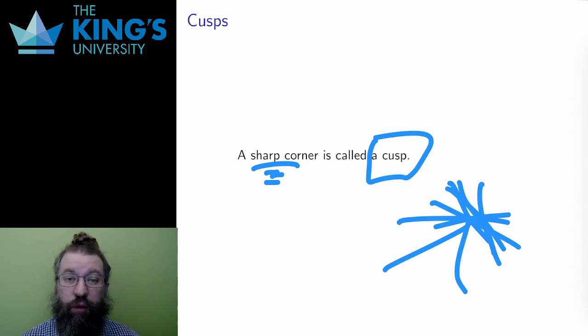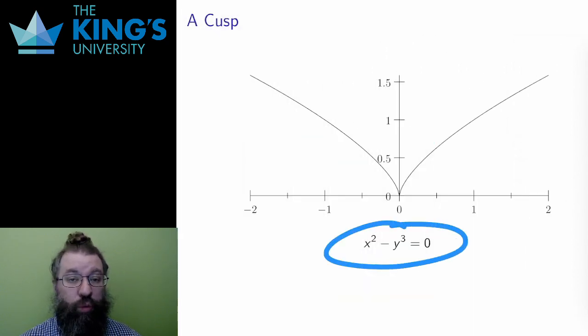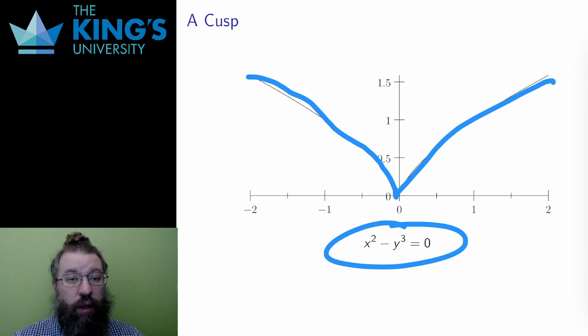This is the algebraic curve x squared minus y cubed equals zero. This only has one component. There are no multiple pieces, and I can draw the graph in one connected path. This has a cusp at 0-0. The curve comes to a sharp corner there and then goes away. No tangent can be defined at this point, at the sharp corner.